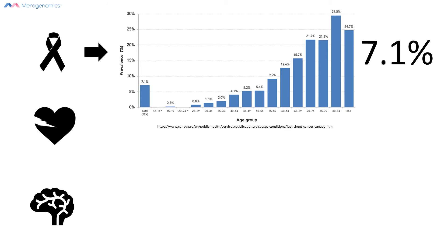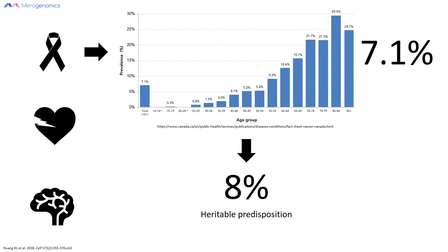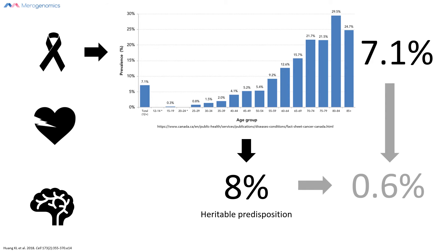We also know that approximately 8% of all cancers have a hereditary predisposition, meaning there are underlying genetic causes that contribute to the development of that cancer. That means approximately 0.6% of all Canadians have a genetic predisposition towards developing cancer.